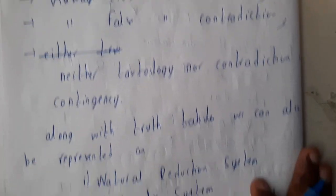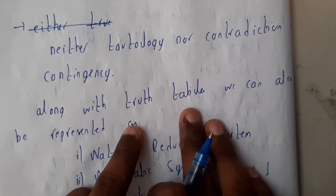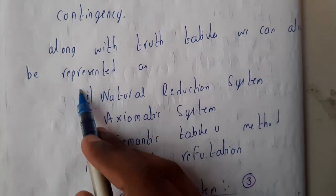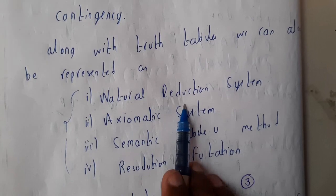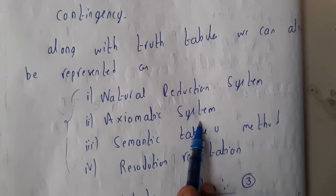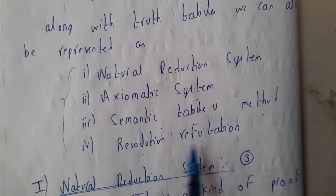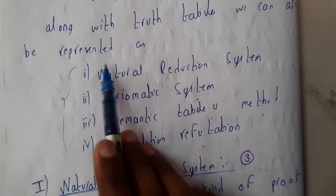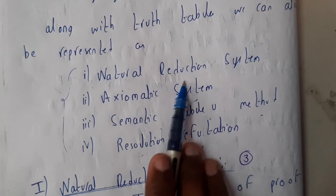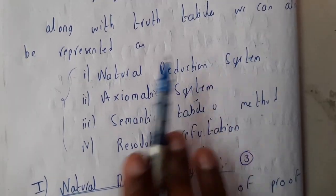Along with the truth tables, we can also represent in these four ways: natural deduction system, axiomatic system, semantic table method, and resolution refutations. In the next lecture, we'll be going through the natural deduction system. Thank you, thanks for watching.